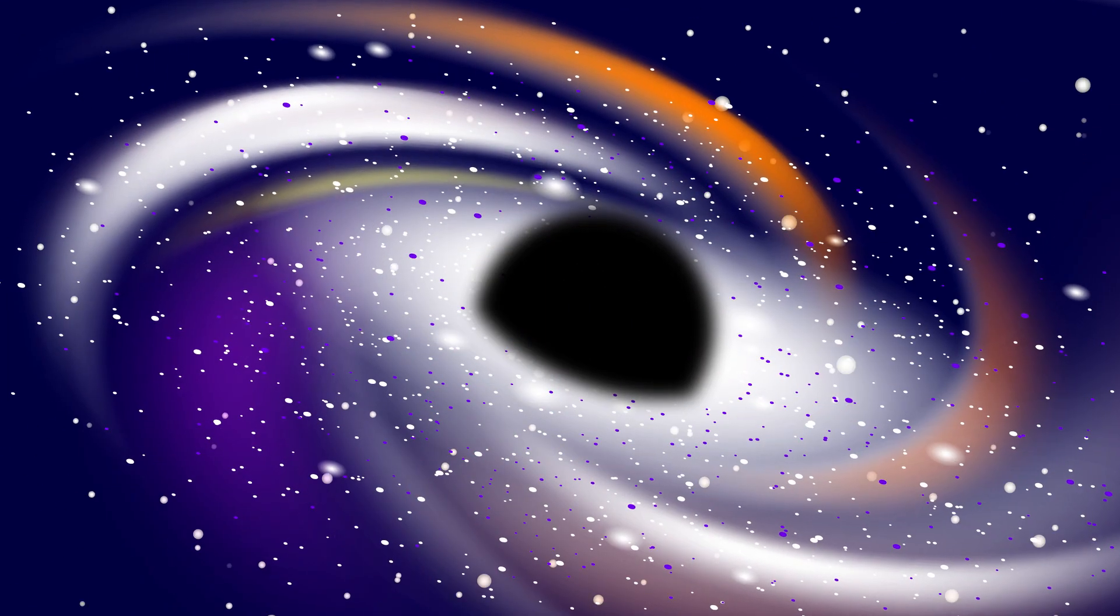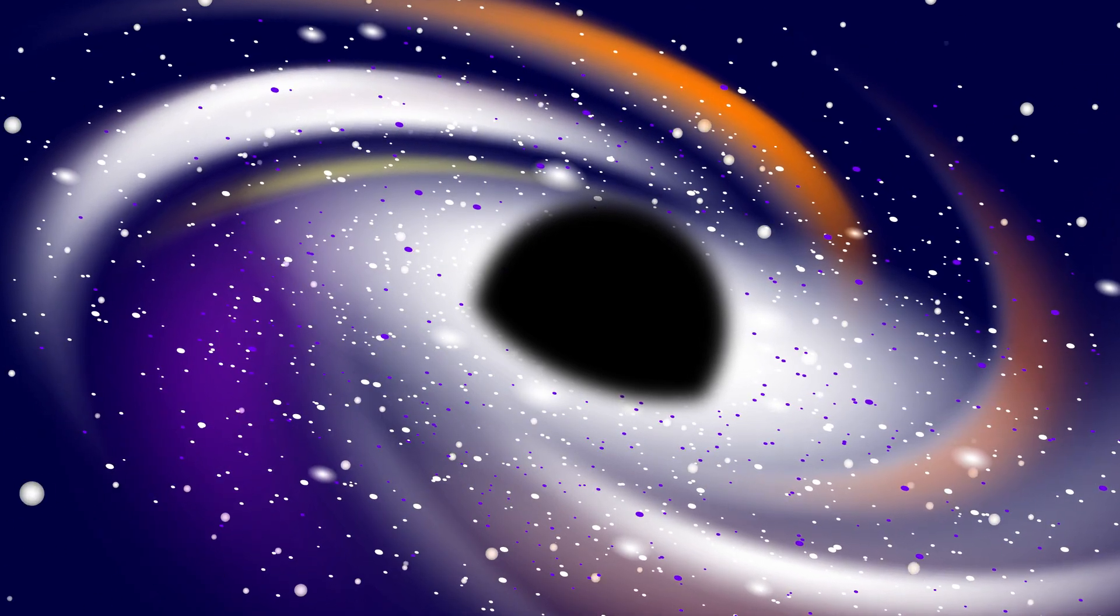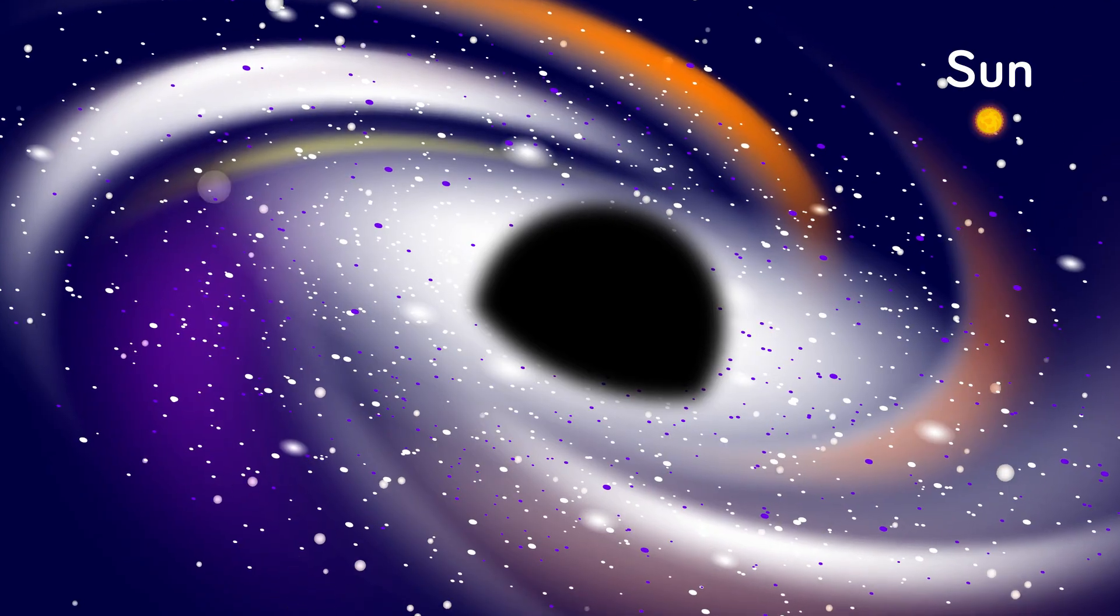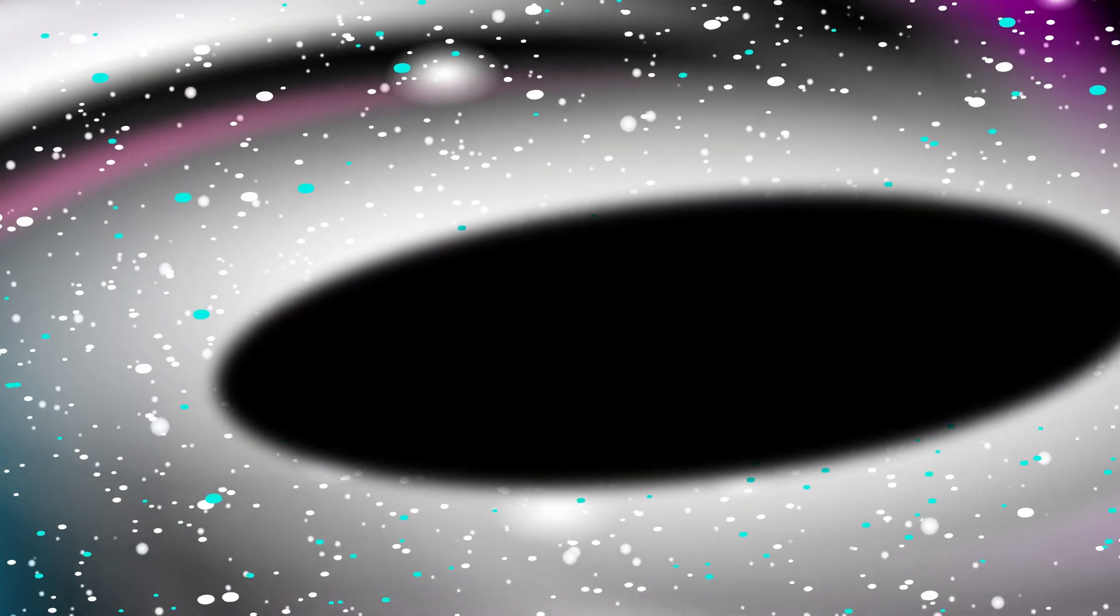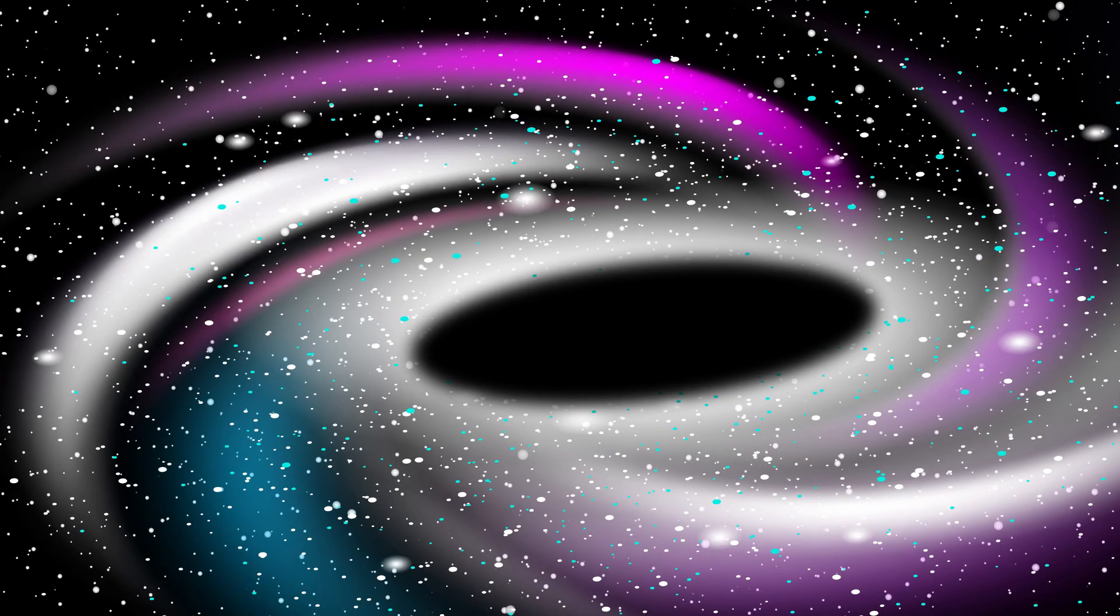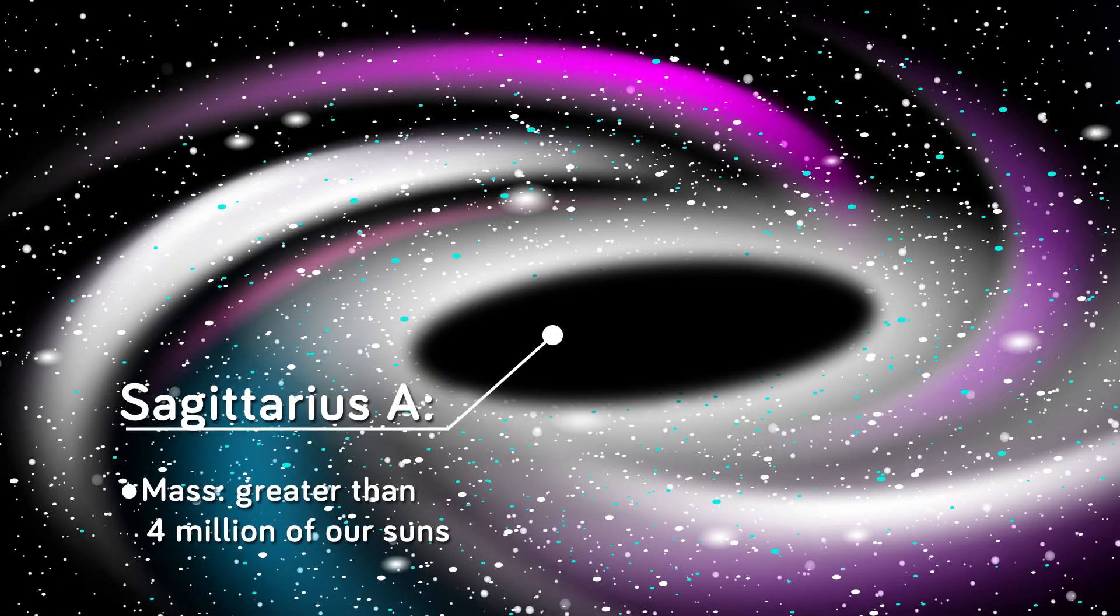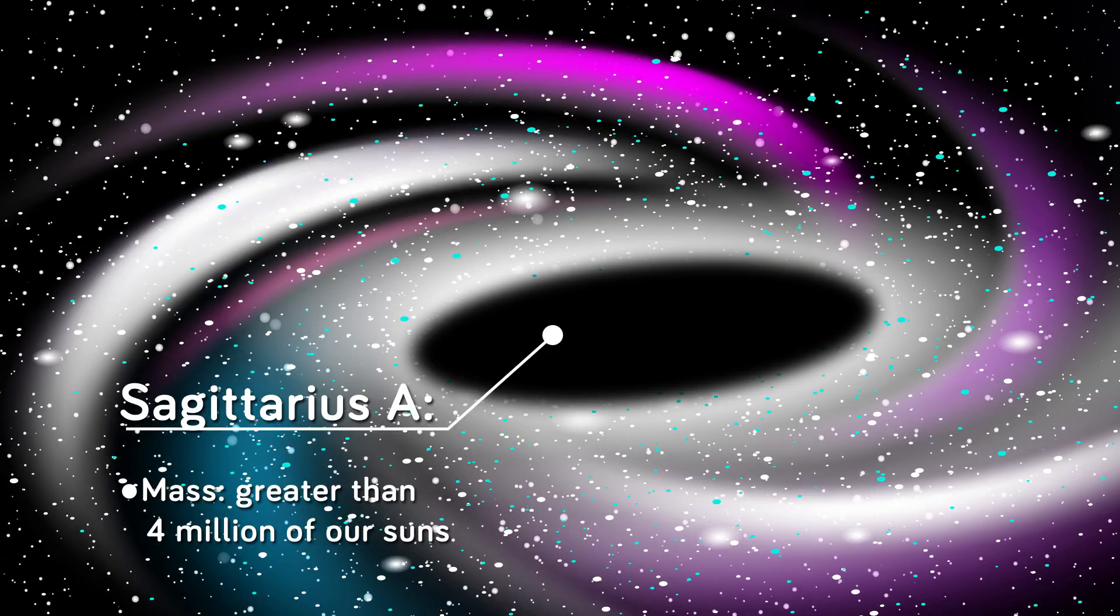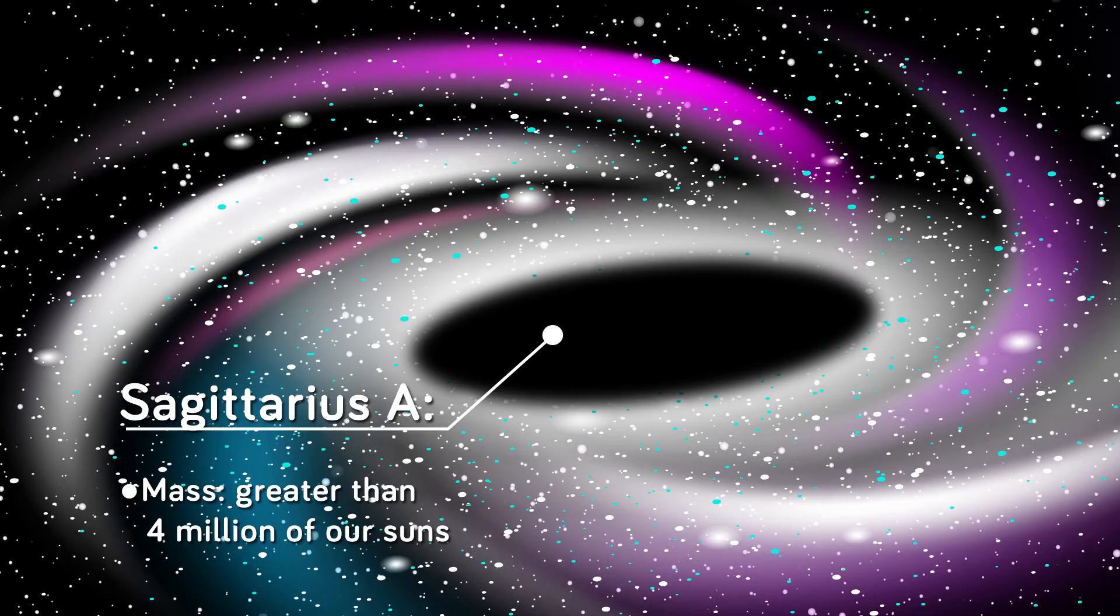The types of black holes caused by an imploding star are called stellar black holes, and they can be up to twenty times more massive than our sun. Some black holes are as small as a single atom, but have the mass of a large mountain. At the center of each galaxy in the universe is a supermassive black hole, which scientists believe were created at the same time as the galaxy they're in. Sagittarius A is the name of the supermassive black hole at the center of our galaxy, the Milky Way, and it has a mass greater than four million of our suns.